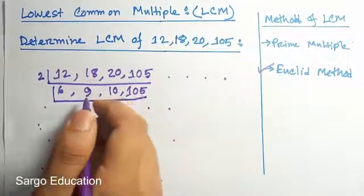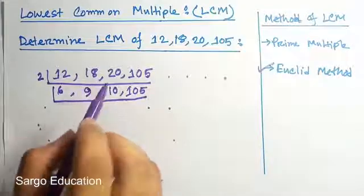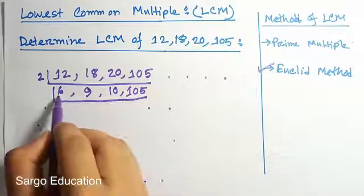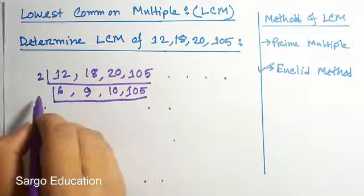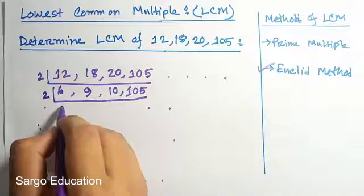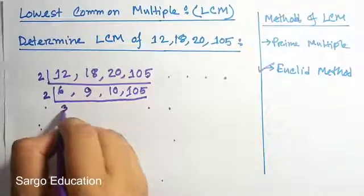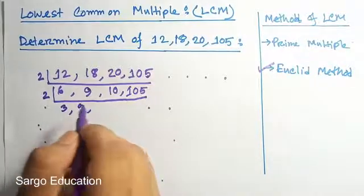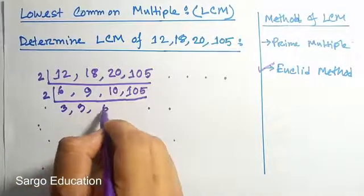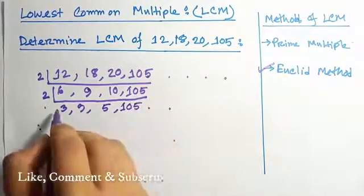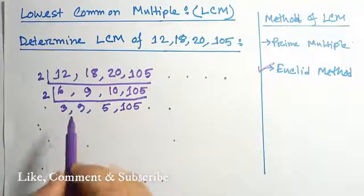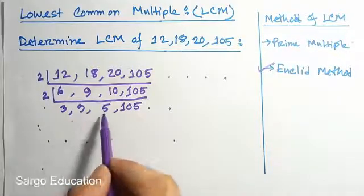Again we take another number. We see here 6 and 10 can be divided by 2, so we write 2. After dividing we get 3, 9 remaining, 5, and 105 is also remaining. Now see these numbers 5 and 105 can be divided by 5.